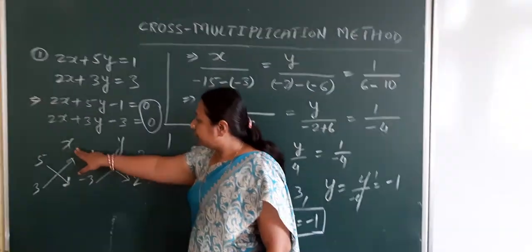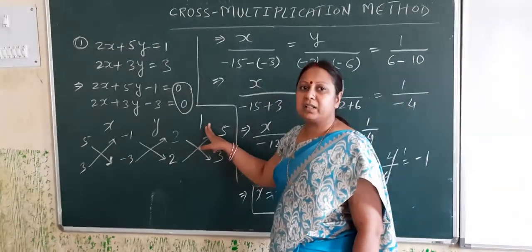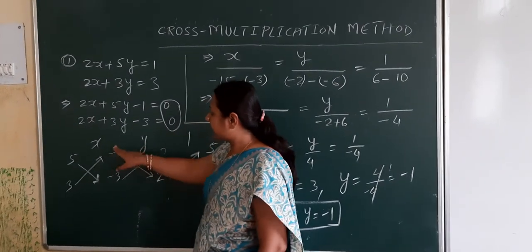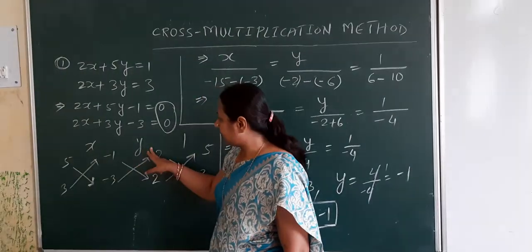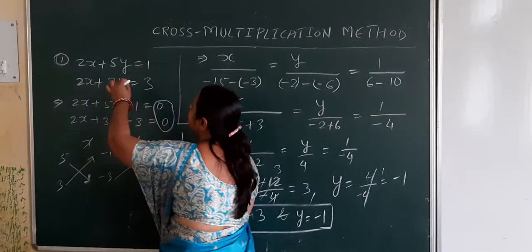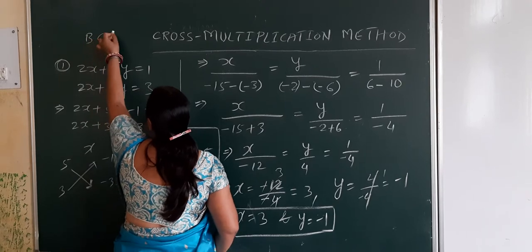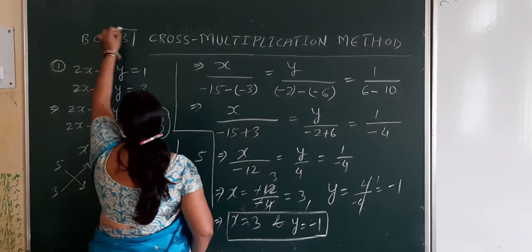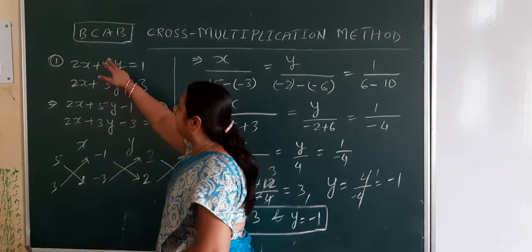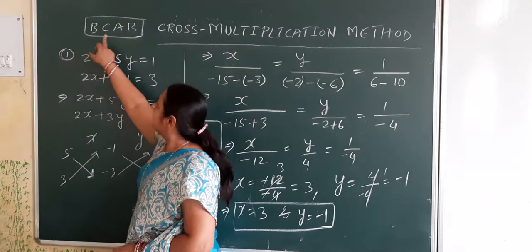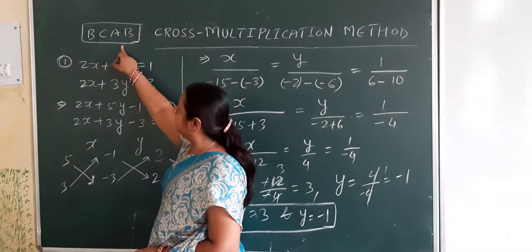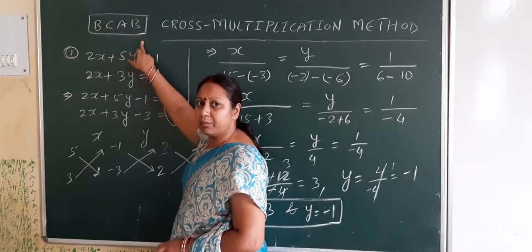The second step: write x, y, and 1 with some distance between them. Remember the arrangement b, c, a, b — where b is the coefficient of y, c is the constant term, a is the coefficient of x, and then repeat b, the coefficient of y.